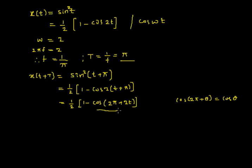So this looks like that cos(2π + 2t). So which is going to be equal to 1/2(1 - cos 2t).